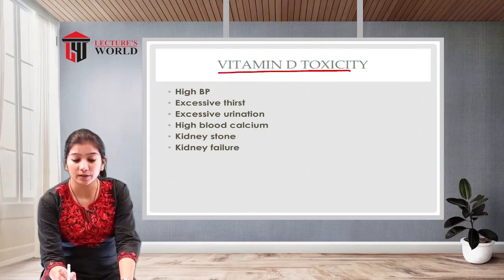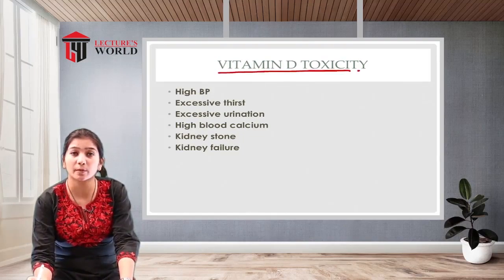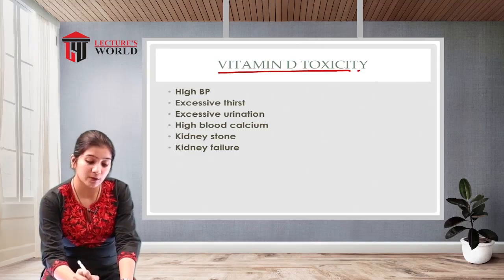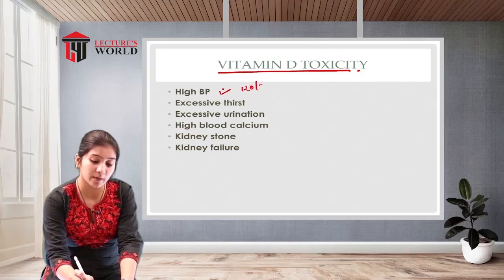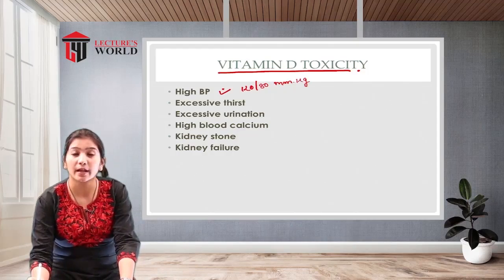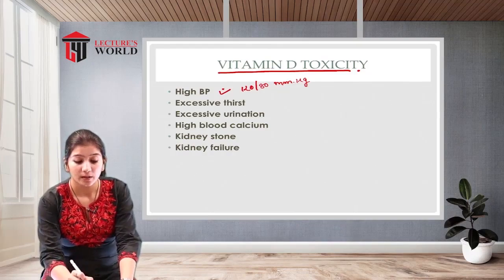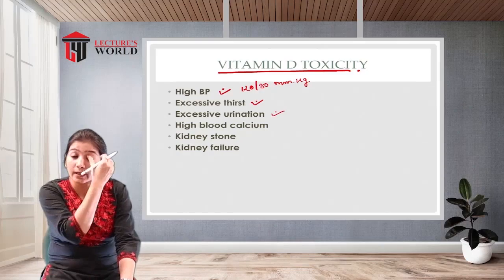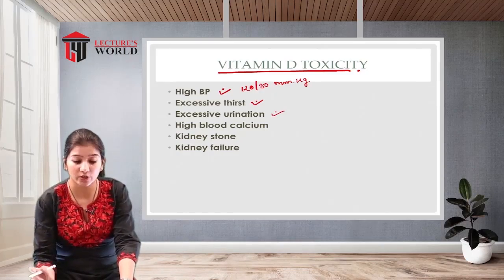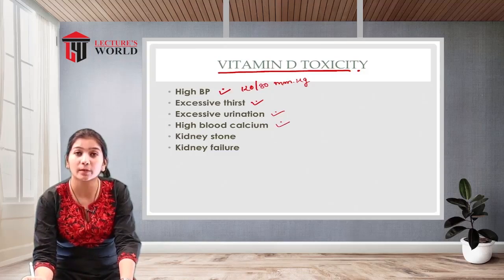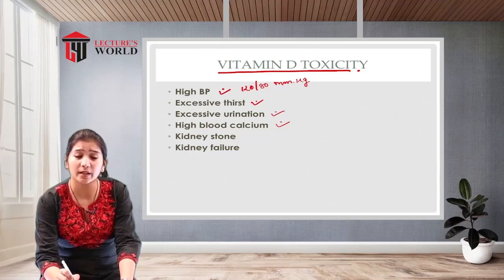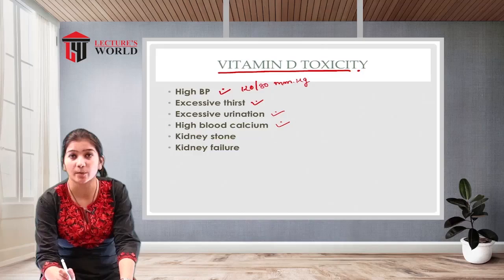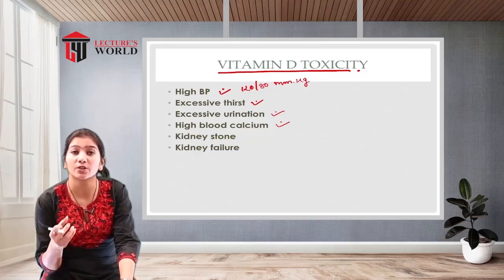Next is vitamin D toxicity. Because of excessive consumption of vitamin D, a person may suffer from high blood pressure — normal blood pressure is 120/80 mmHg, but excessive vitamin D may increase it. The person may also experience excessive thirst, excessive urination, and high blood cholesterol. Calcium levels in the blood rise because vitamin D is responsible for calcium absorption, so higher vitamin D leads to higher calcium absorption.